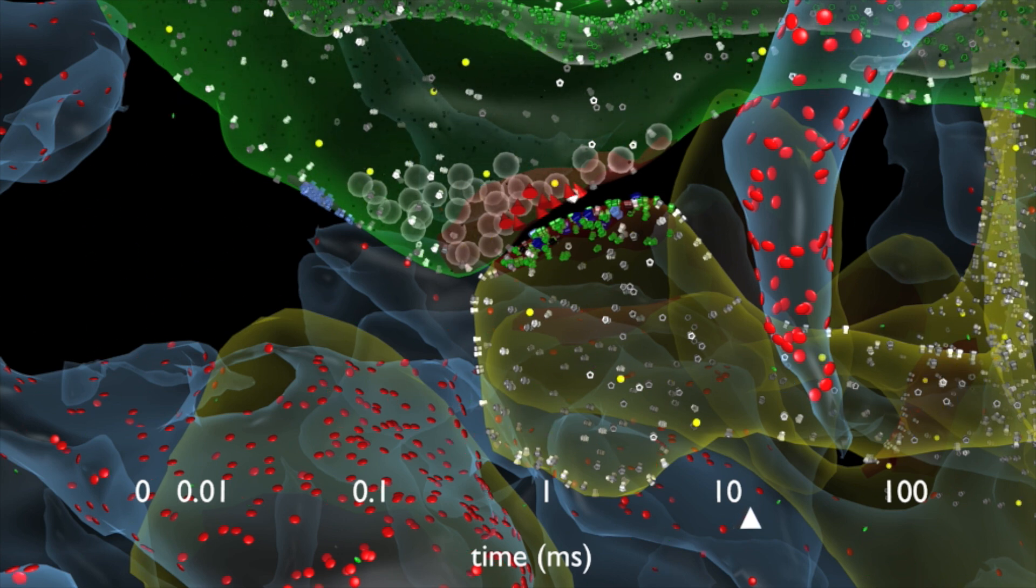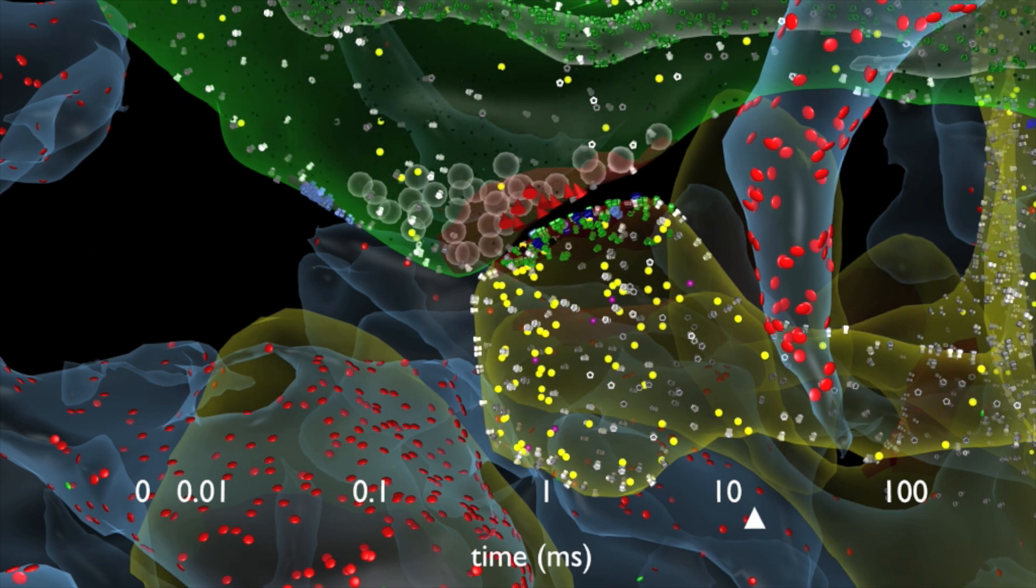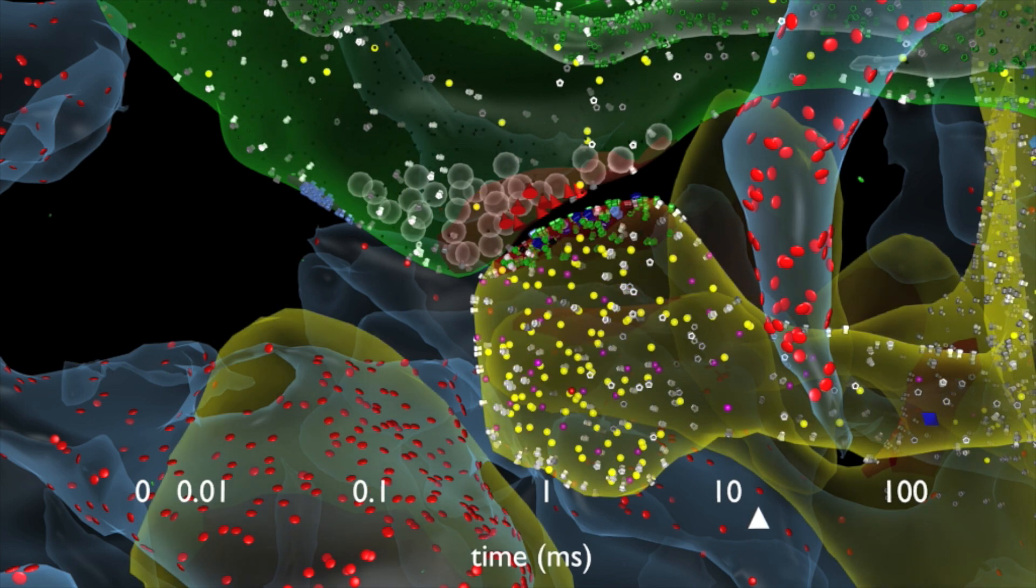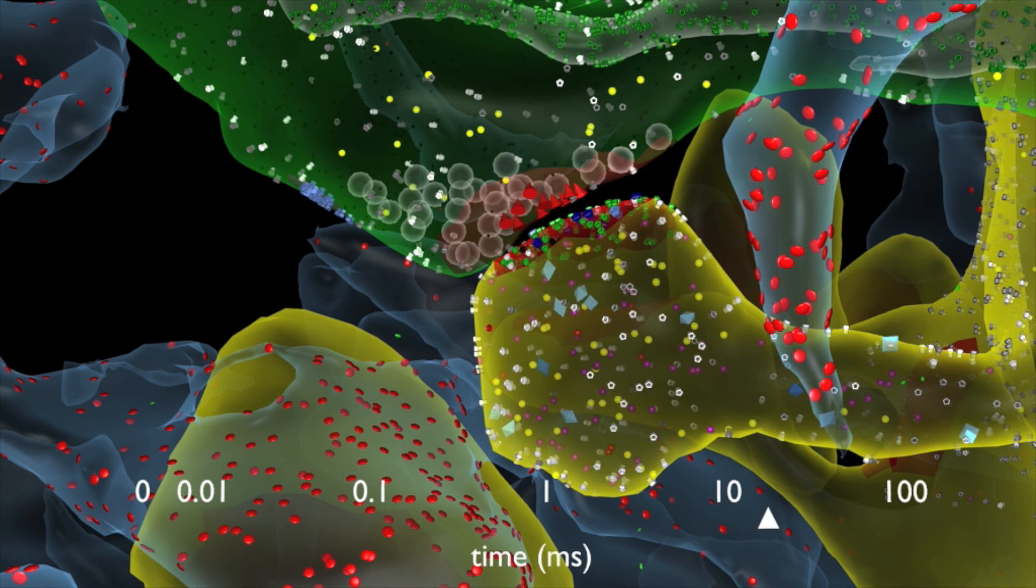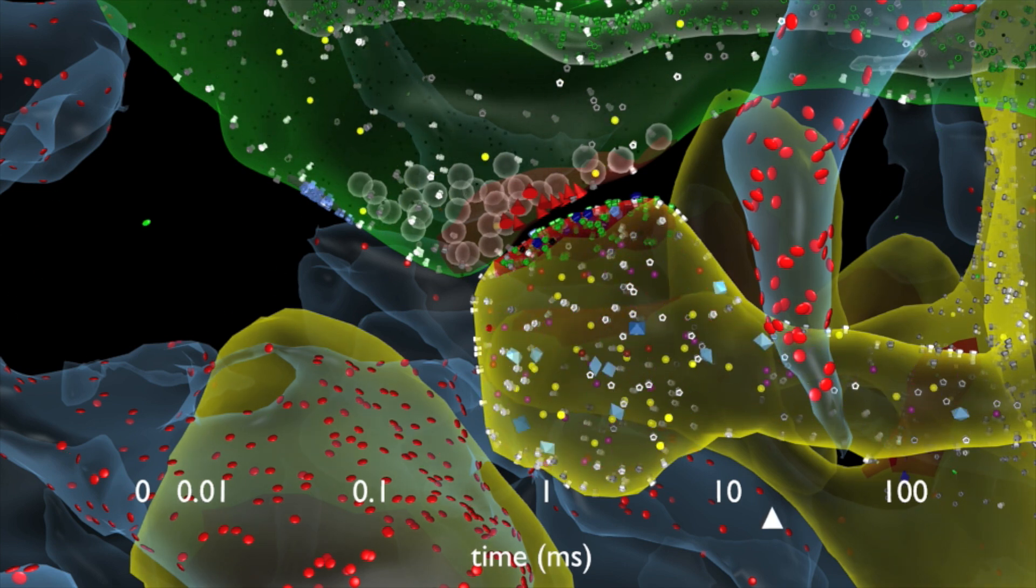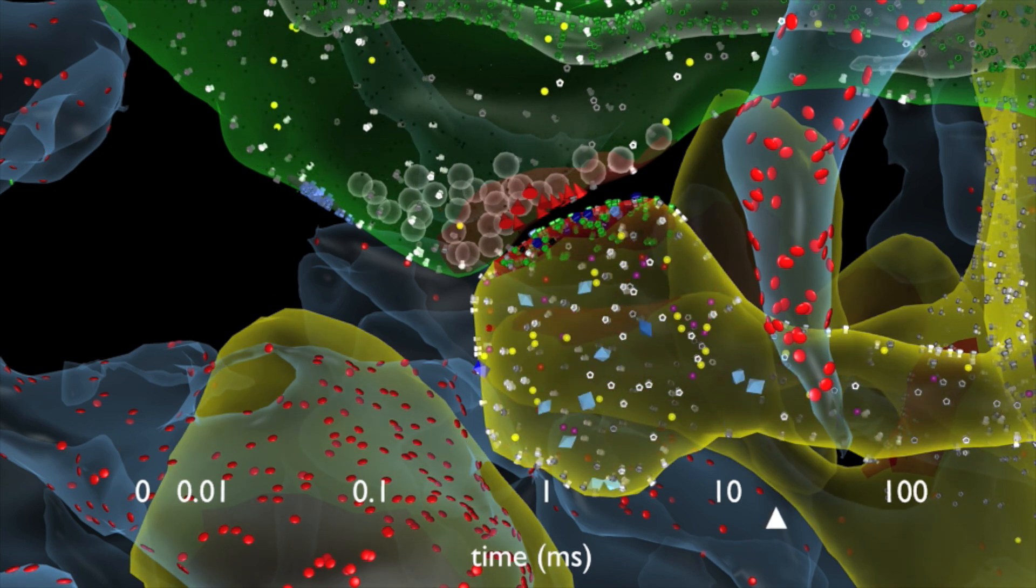Calcium in the dendrite goes on to bind to other signaling proteins, shown in magenta orbs and blue cubes. If the signal is strong enough, it will be successfully transmitted into the second neuron's dendrite. This starts a domino effect where more receptors are letting in even more calcium.